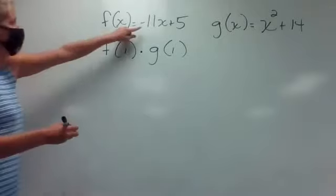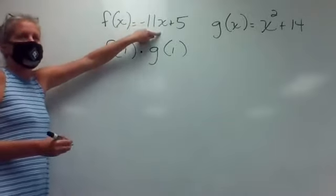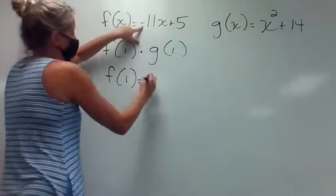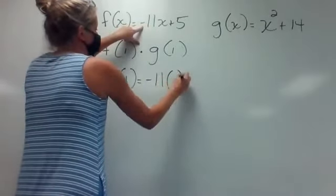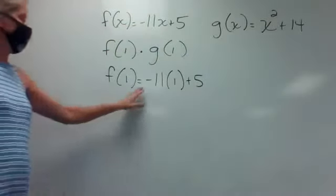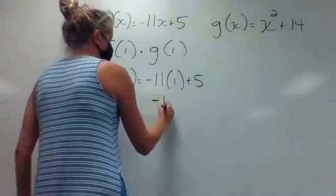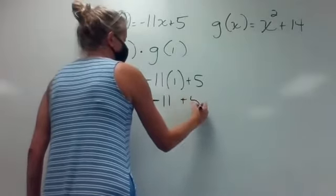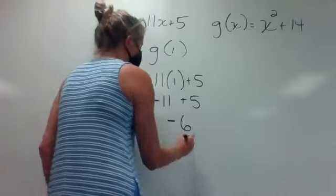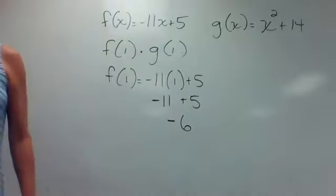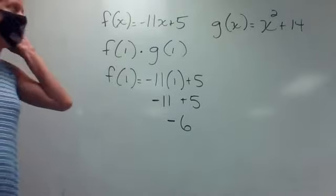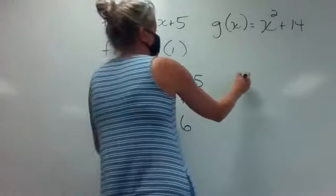Let's find f of one first, which tells me to go to my f function and replace its x with a one. So I'll have negative 11 times one plus five. Negative 11 times one gives me negative 11, bring down that plus five. Negative 11 plus five gives me negative six. So there's your f of one.